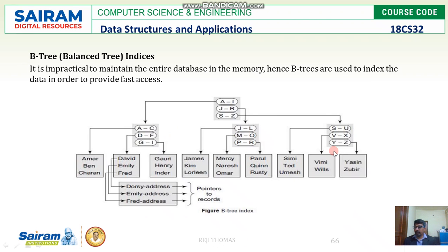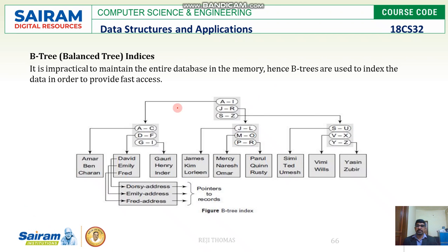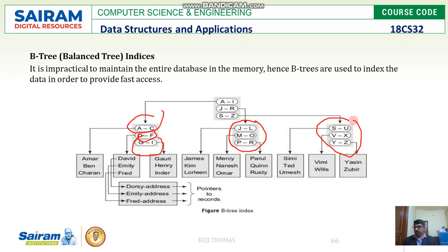The last one is B-tree index, which is similar to multi-level indexing. You can see it is like a tree based on indices. It starts from A to I at the top, then branches: A to C, D to F, G to I. Then J to R branches into J to L, M to O, P to R. And S to Z is further bifurcated, giving a hierarchical tree structure.